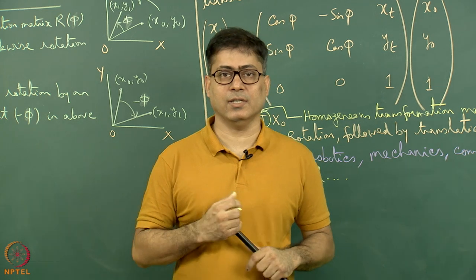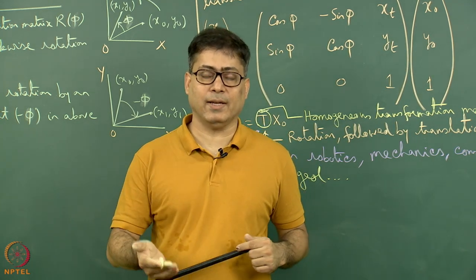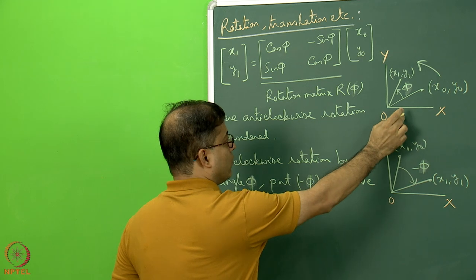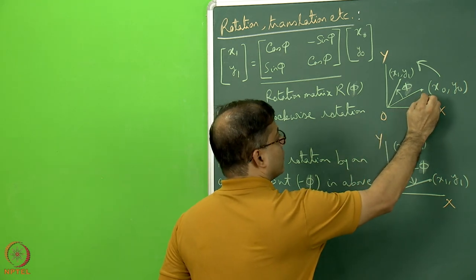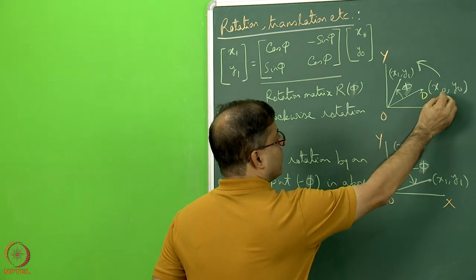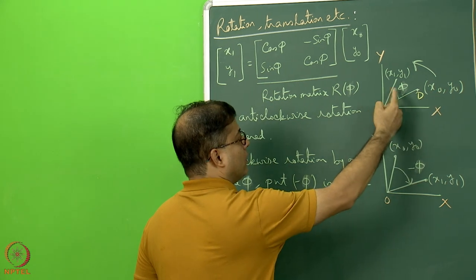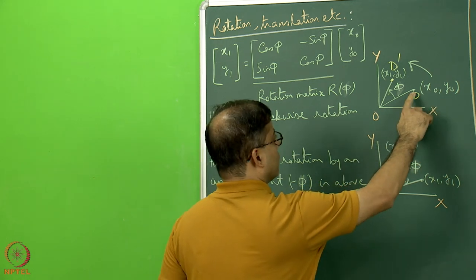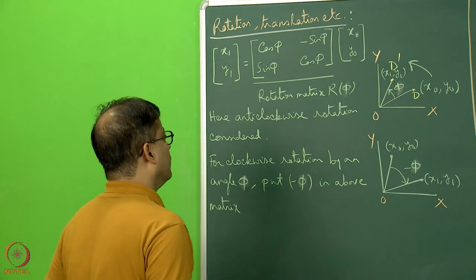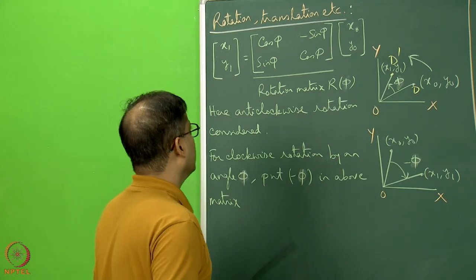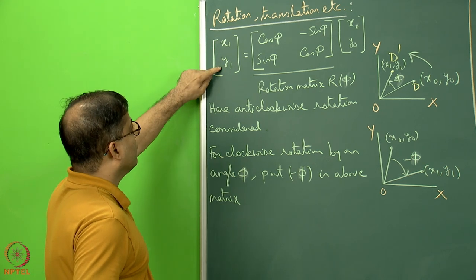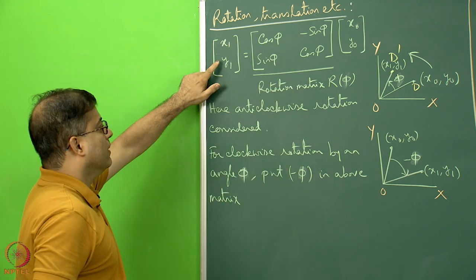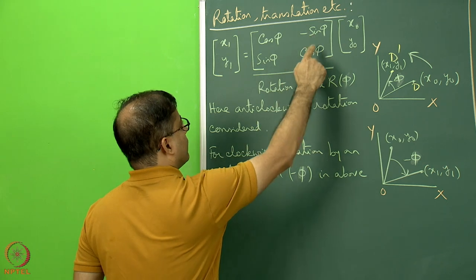For rotation within the ox-oy axis: the green board defines a plane, and there is a point OD with coordinates x0, y0. A phi amount of anti-clockwise rotation brings the point to D-dash, so x0, y0 is the old coordinate of D, and x1, y1 is the new coordinate of D-dash. Phi is the anti-clockwise rotation angle. The new coordinate x1, y1 can be represented as a function of x0, y0, and angle phi.